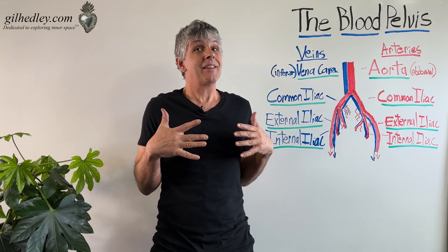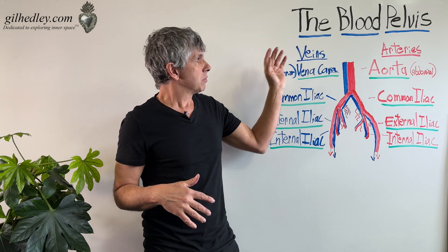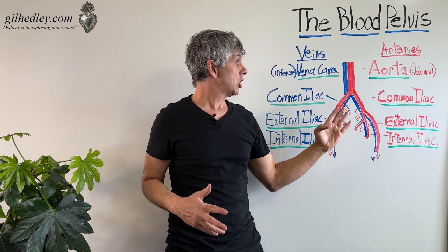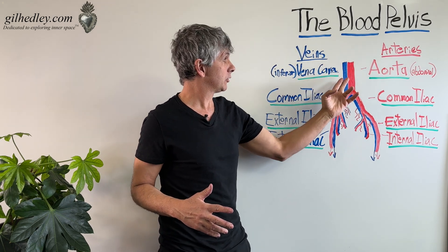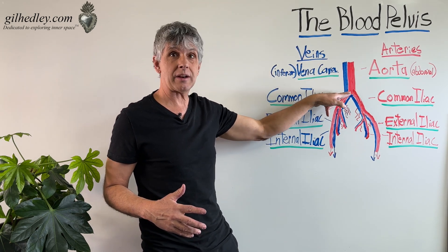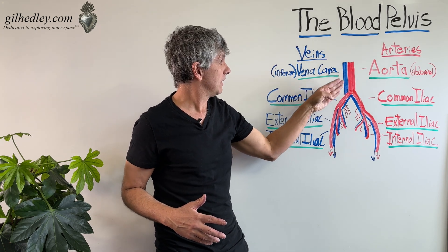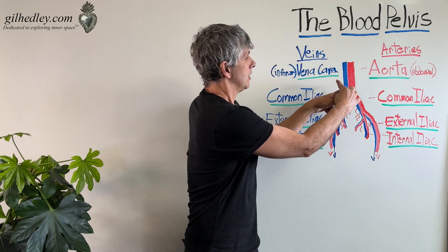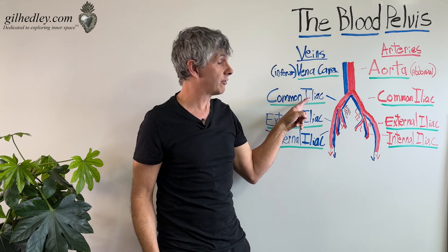I could have looked in a book, but there's nothing like feeling this stuff. So the blood pelvis basically consists in the branching of the main trunks of the heart that run through the abdominal space. We're on top of the spine here, getting down to the sacrum, over the vertebrae. And we have the abdominal aorta and the inferior vena cava.